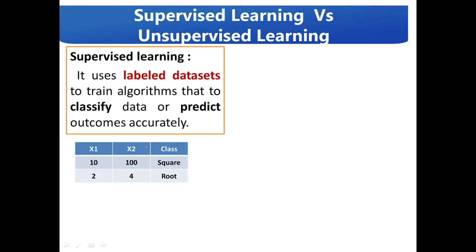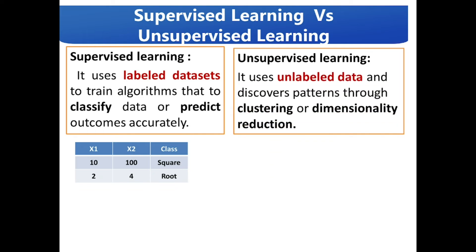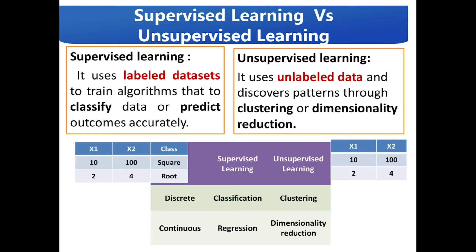When the input data is not labeled and when we don't have any prior knowledge about the data which is being given, it is called unsupervised learning. It discovers patterns through clustering and dimensionality reduction. The dataset here with x1 and x2 represents an example of unsupervised learning.